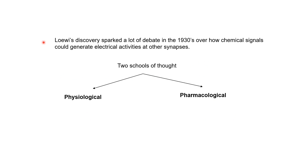Before Loewi's experiments, the general understanding was that communication between neurons might be electrical in nature. His experiment showed the communication might be chemical, and that sparked a lot of debate in the community. Although he showed that electrical activity might result in release of some chemicals, what people found hard to believe was how these chemical signals would convert back into electrical signals on the postsynaptic side. The community was divided into two groups: one thought communication in neurons is primarily electrical and any chemical changes observed might be secondary; the other thought the primary mode of communication is chemical and that this chemical activity should be able to result in electrical activity through some unknown mechanisms.